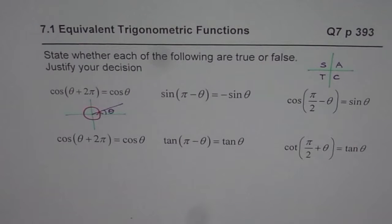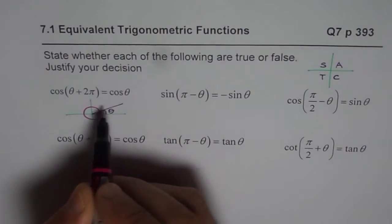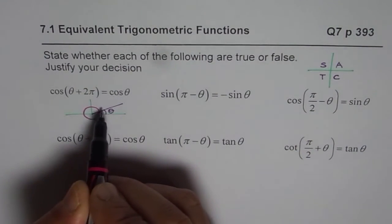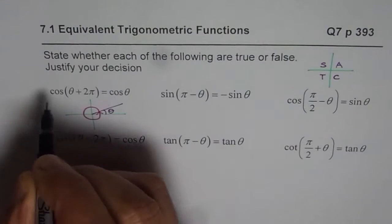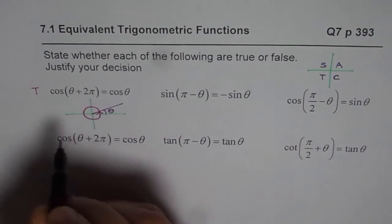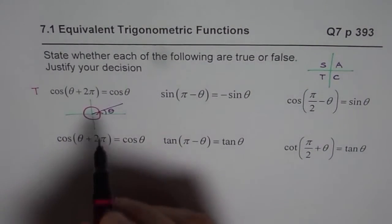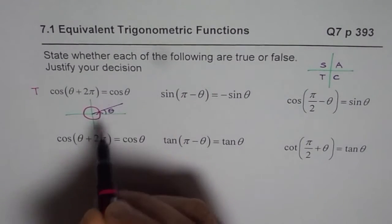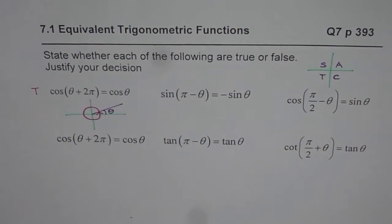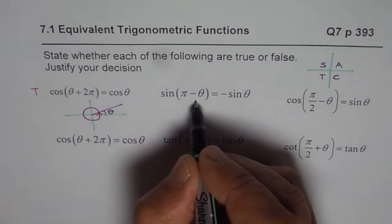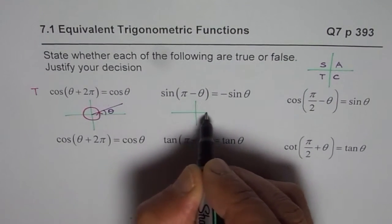So theta plus 2π, you know, are correlated angles. Since you are at the same place and both are positive here, this statement is true. Cos(θ + 2π), you are in the same quadrant, exactly in the same place, so this statement has to be true.